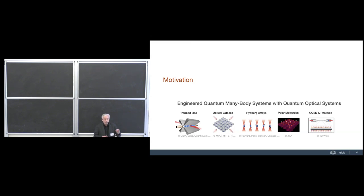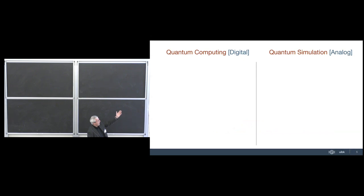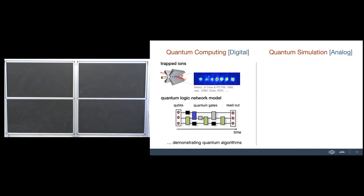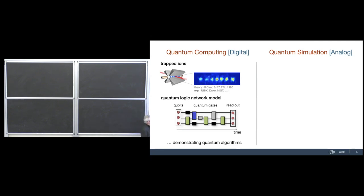There's a distinction between quantum computing and quantum simulation. In quantum computation we implement a general unitary transform on a set of qubits or spin-1/2 systems, composed of single-qubit gates and entangling gates. One application is digital quantum simulation, where the time evolution through gates mimics the time evolution of a many-body system. The key question is: can we find physical systems to implement these building blocks directly?